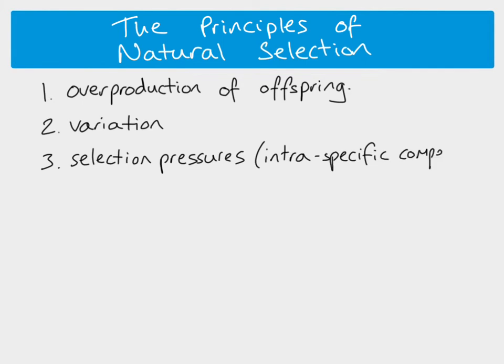Selection pressures like predation are often linked to intraspecific competition, which results from overproduction of offspring. Because far more individuals are born than will survive, many die because they're competing for resources. With a huge number of individuals born and only a limited number of resources, that competition means some of them are going to die — and the ones that die are more likely to be those with the less favorable characteristics.